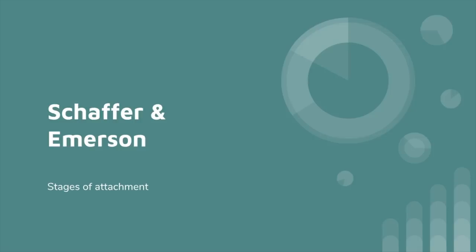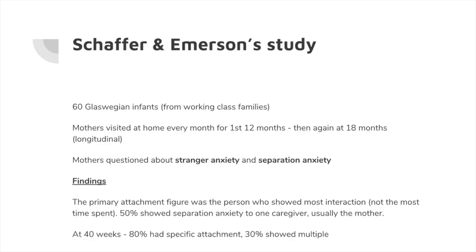Moving on to Schaffer and Emerson — important researchers in attachment — they looked at the stages of attachment. Their key study involved 60 Glaswegian infants, all from working-class families. They went to the infants' mothers and asked them to keep a diary, looking at the interactions of these infants and their mothers. They visited their homes once a month for the first 12 months and then went back again at 18 months.